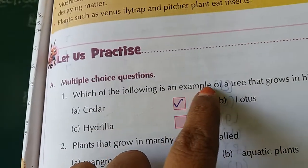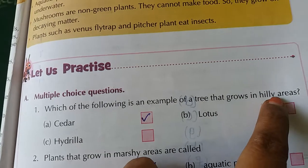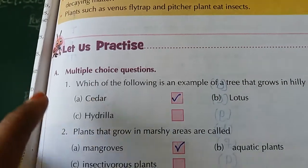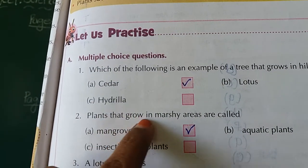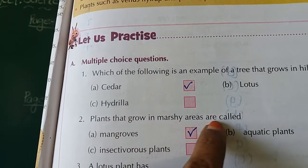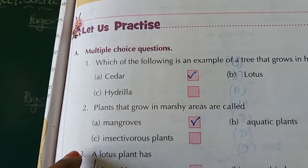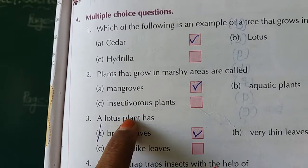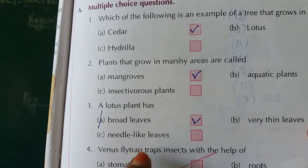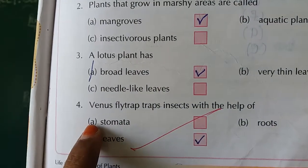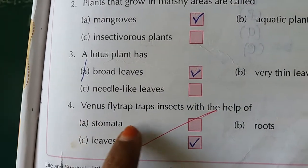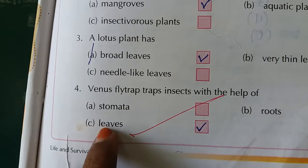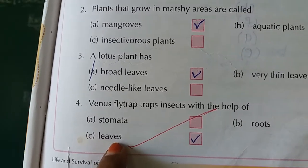One more time - first question: which is an example of a tree that grows in hilly areas? Cedar. Second question: plants that grow in marshy areas are called? Mangroves. Third question: a lotus plant has broad leaves. Fourth question: Venus flytrap traps insects with specially designed leaves.